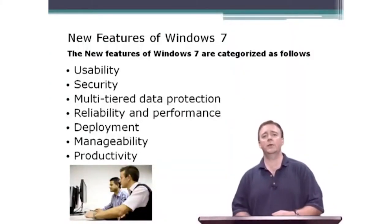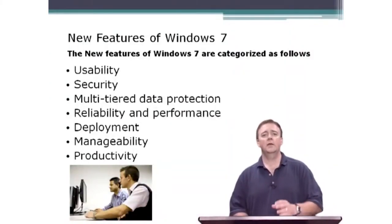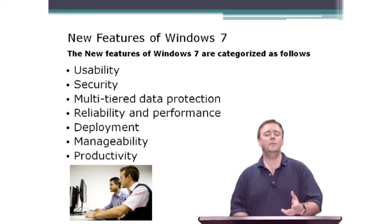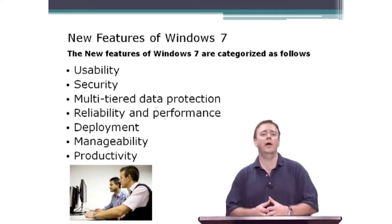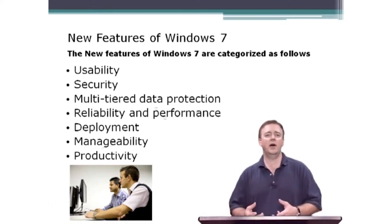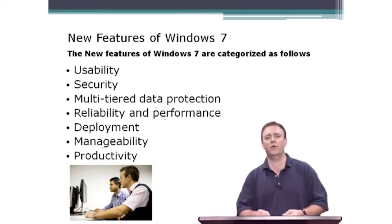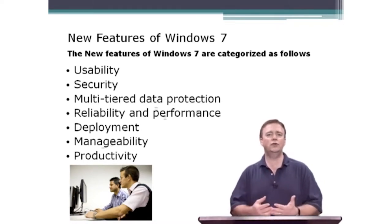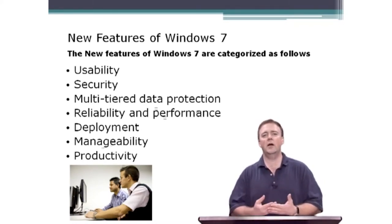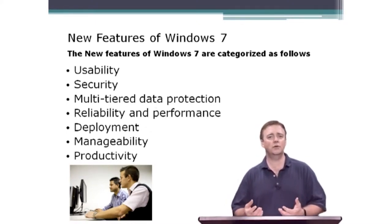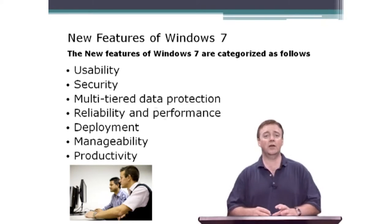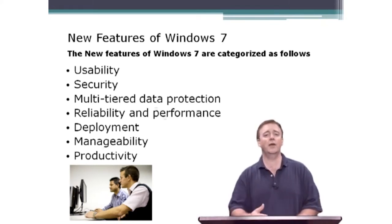First, key features for Windows 7. Some are categorized by usability — things like changes to the desktop, pinning things to the taskbar, being able to shake windows, new search capabilities, creating searchable and indexed libraries, and federated types of searches where I can actually have a search that goes out and looks at other shares and other locations. Great things in the world of usability.